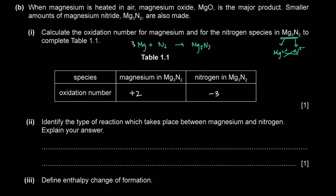In the products, magnesium has an oxidation number of +2 and nitrogen has an oxidation number of −3. The magnesium is being oxidized and the nitrogen is being reduced. Magnesium loses electrons undergoing oxidation from 0 to +2. Nitrogen gains electrons undergoing reduction from 0 to −3. So this is a redox reaction.